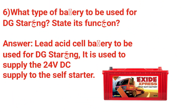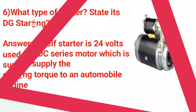What is the battery used for DG starting? State its function. A lead acid cell battery is used for DG starting. It is used to supply 24 volts or 12 volts DC supply for starting the self-starting motor.